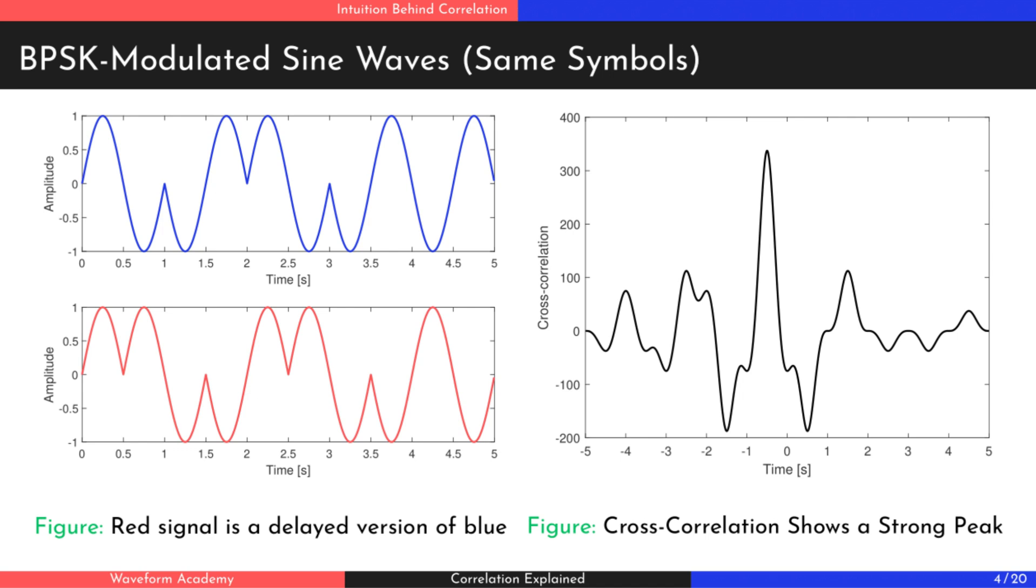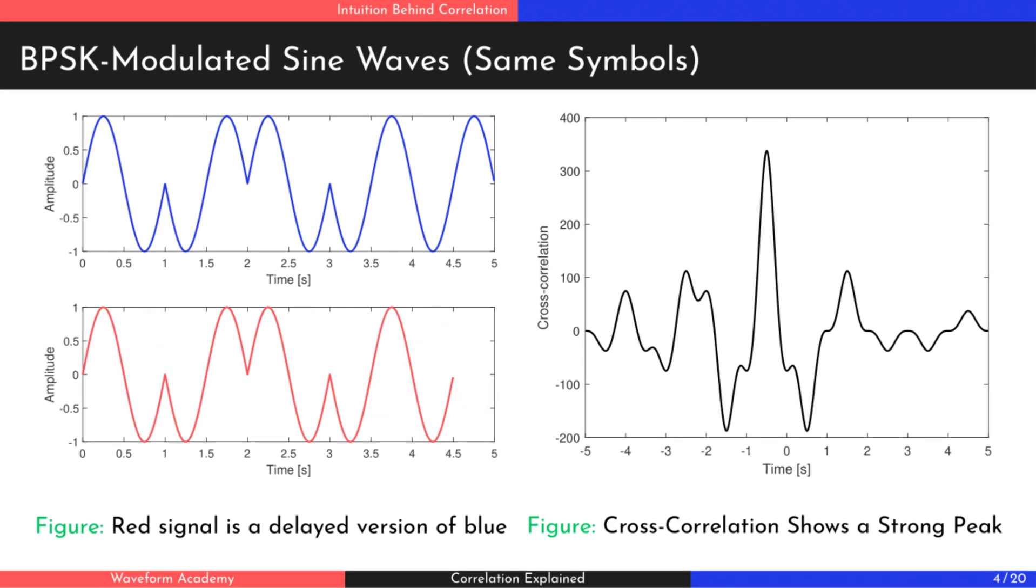Now let's delay the red signal by half a second. Notice the strong peak that appears, showing high similarity. In fact, these two signals are identical, and the correlation function helped us find the time delay between them.